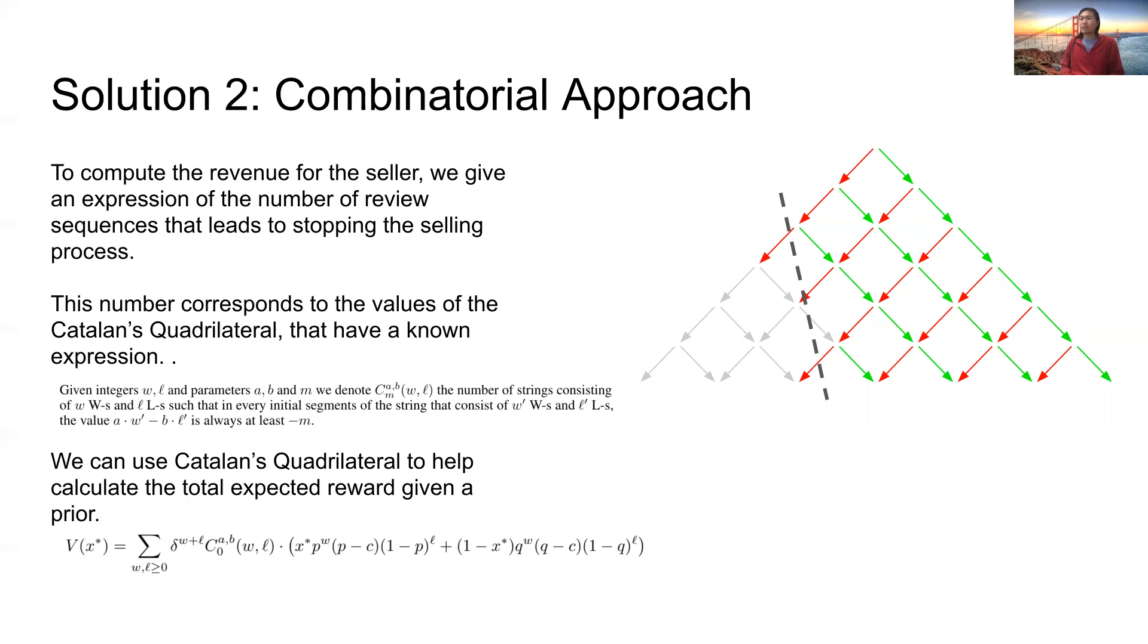Through Catalan quadrilaterals, we can then give an expression to calculate the prior X star, where we know the expected revenue is 0. And from knowing the prior X star, we can then compute the expected revenue at any prior.